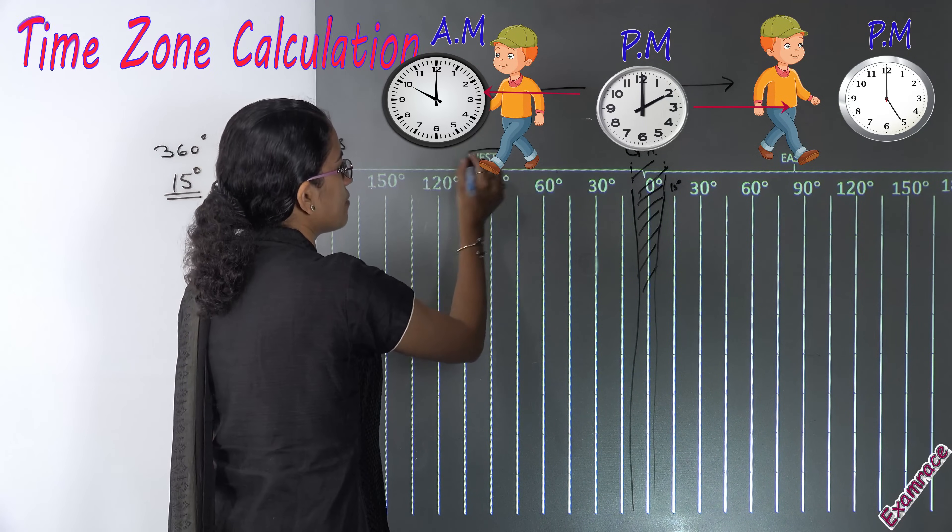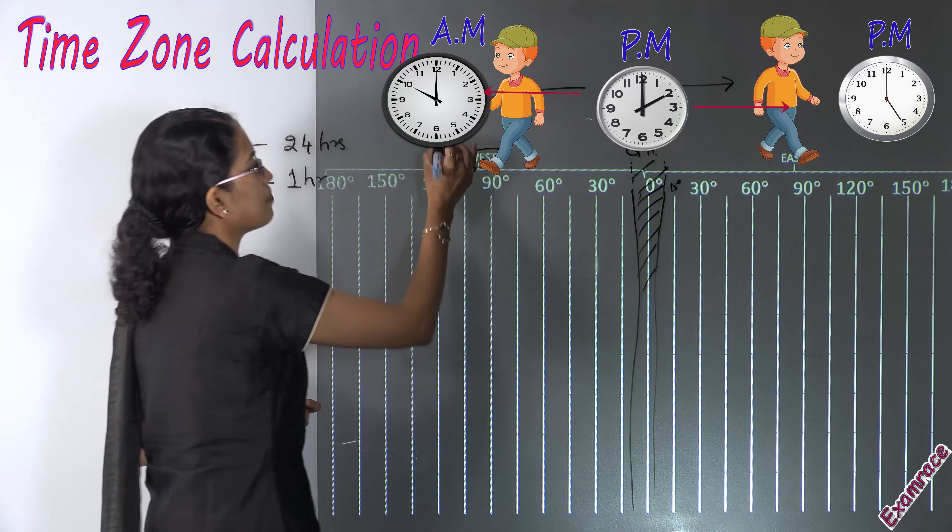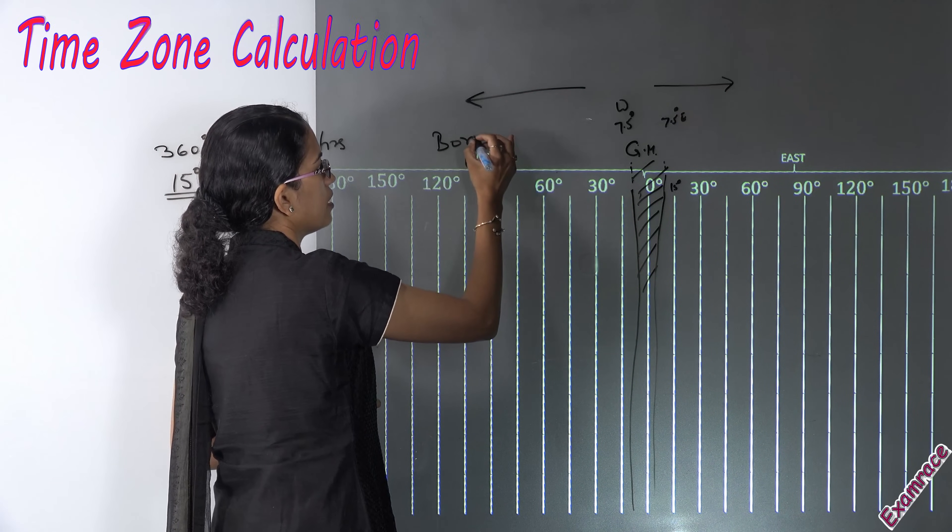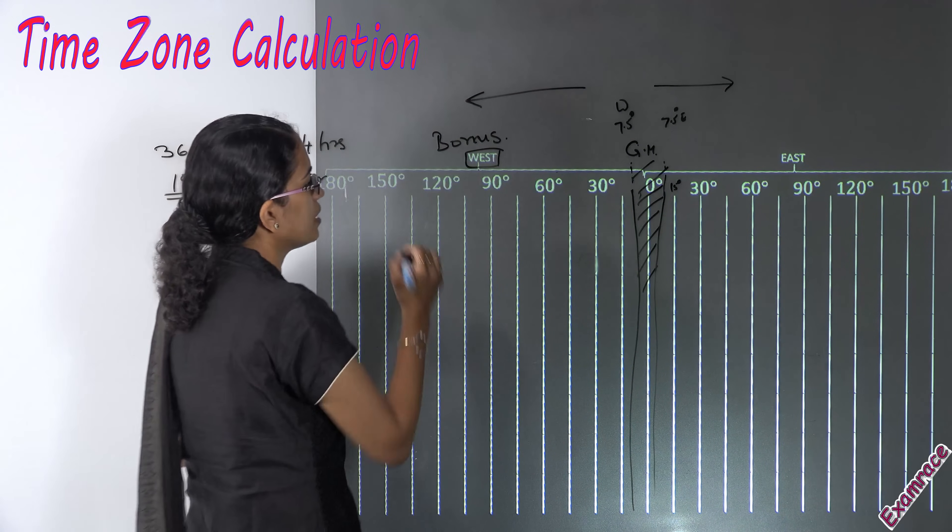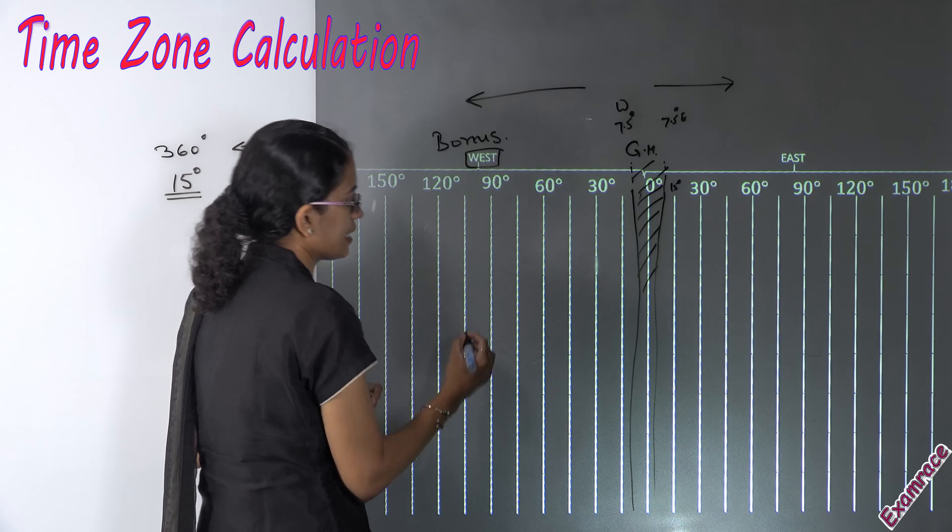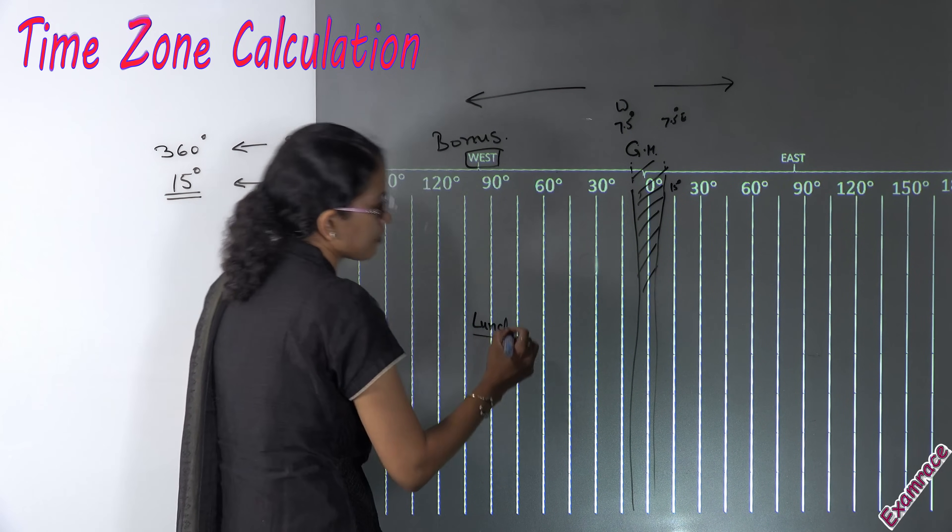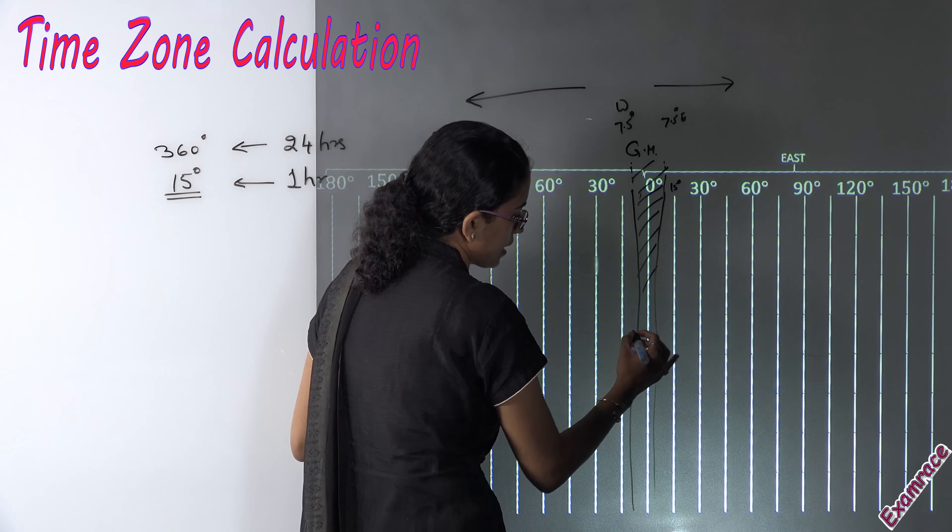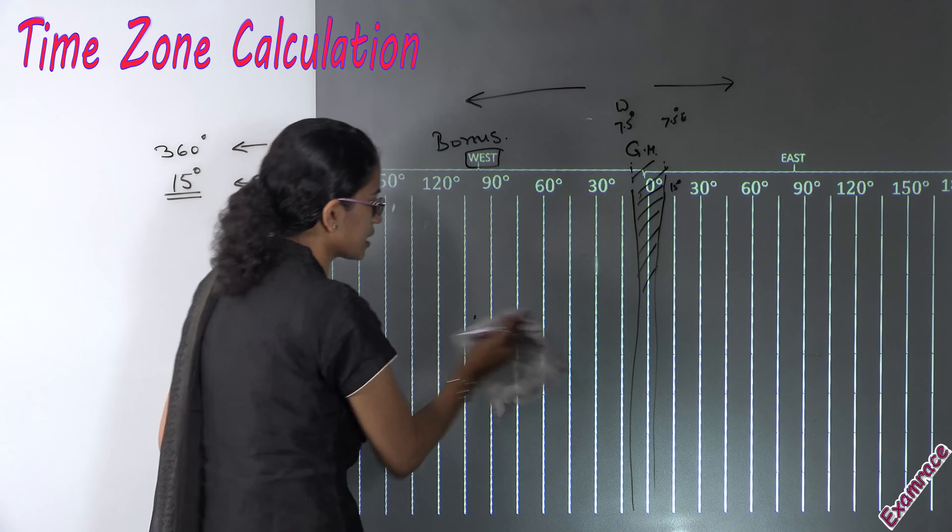So the people in the west have a bonus time. That means at the time a person here at 90 degrees west for example is doing lunch, at this point let's say he is doing his breakfast.